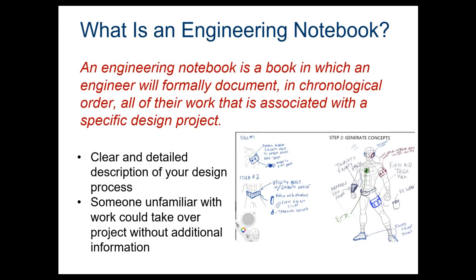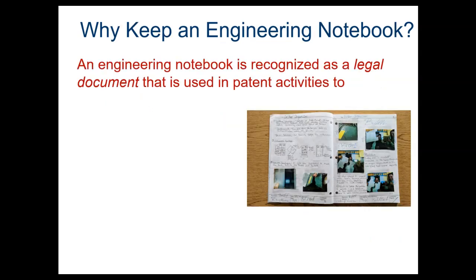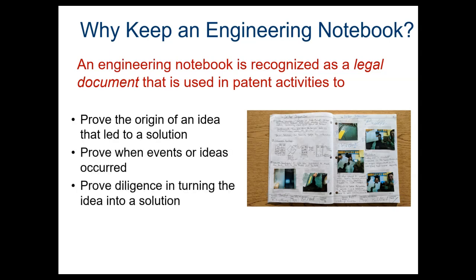An engineering notebook is a book in which an engineer will formally document in chronological order all of the work that is associated with a specific design project. It has clear and detailed descriptions of your design processes. Someone unfamiliar with the work could take over the project without additional information. Why do we keep an engineering notebook? It's because it's recognized as a legal document whenever you're needing to make a patent or copyrights. It proves the origin of an idea, when things happened, that you actually did the work and when the work became a working solution.